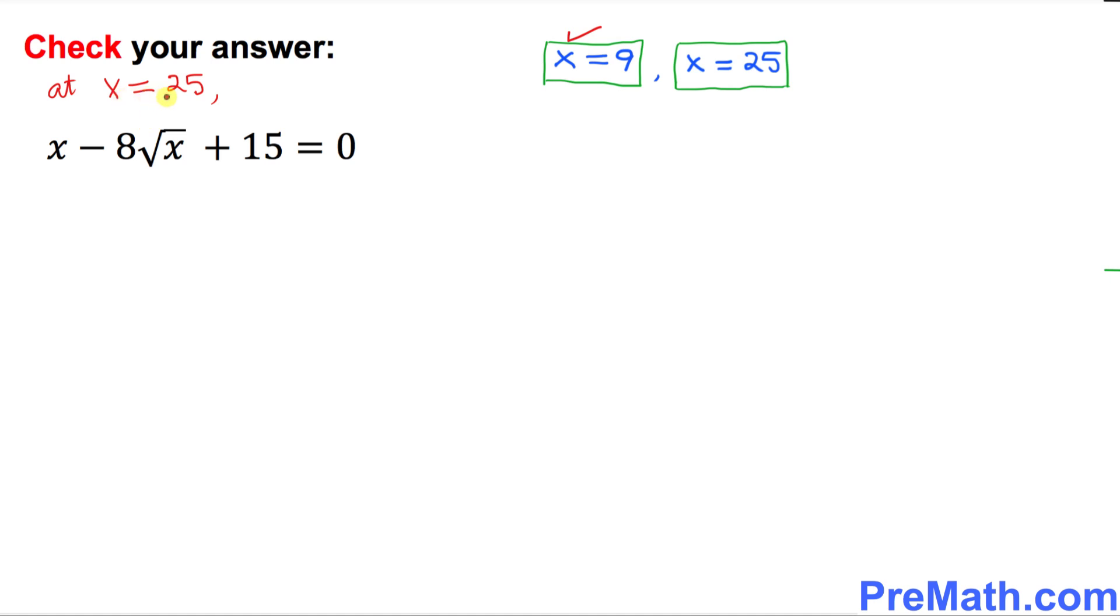So next, we're going to check x equal to 25. So wherever you see x, replace it by 25. So this becomes 25 minus 8 times square root of 25 plus 15. Is it equal to the right hand side, which is 0? Let's simplify. We know that the square root of 25 is 5. So I can write 25 minus 8 times 5 plus 15.